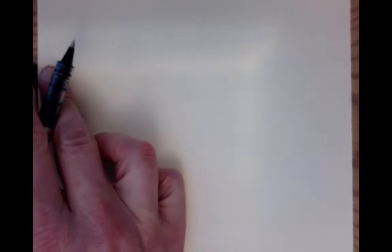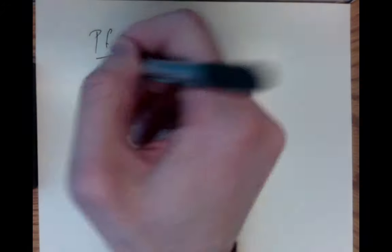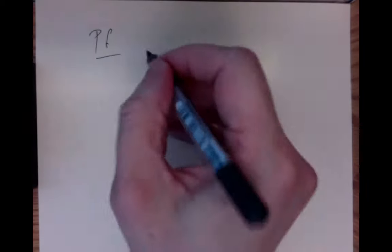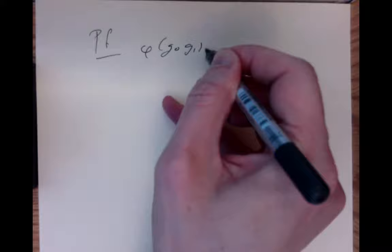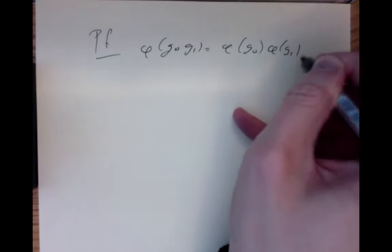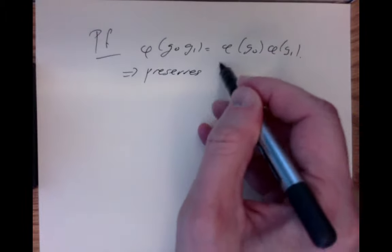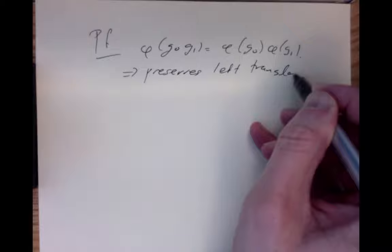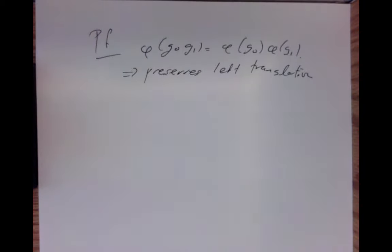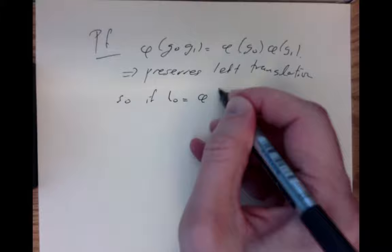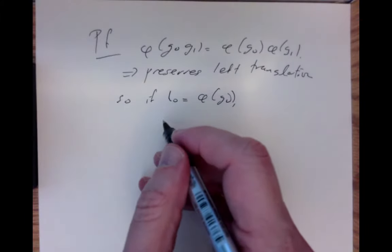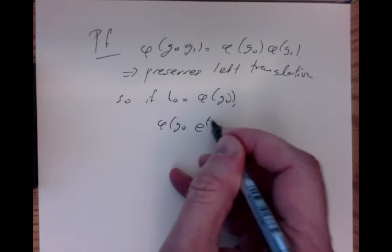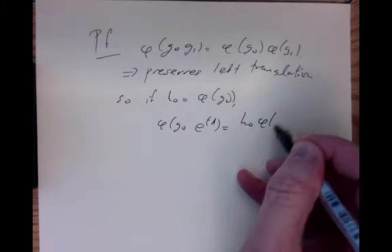Let's prove that. We start with the fact that it's a group morphism. Therefore it preserves left translation and right translation because left translation is a group operation. So the left translation operators become left translation operators. If H_0 is phi of G_0, we get that phi of G_0 times e to the tA equals H_0 times phi of e to the tA.